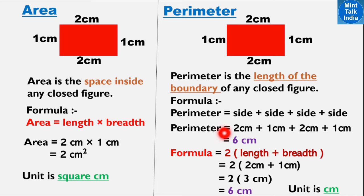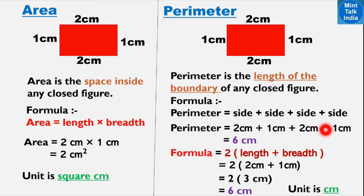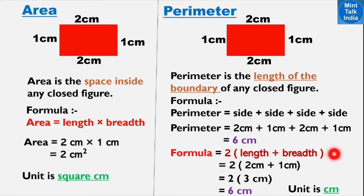This gives us the same answer. We can find the perimeter by adding all sides directly, or we can use the formula 2 × (length + breadth). Whatever method your teacher has taught you, follow that method.